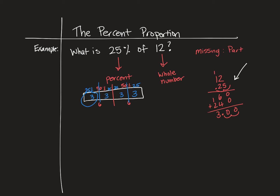There's also a way of solving this by using the percent proportion, which might help you on more complicated questions. Go ahead and write the percent proportion formula: the part over the whole equals the percentage over 100.